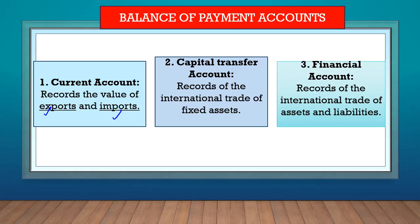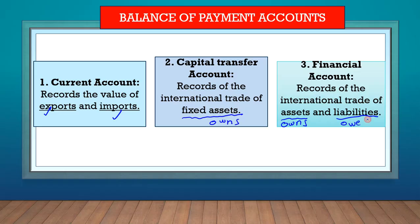The capital transfer account and the financial account go further. The capital transfer account also records fixed assets. Remember, assets are all the items that the business owns, and if they are fixed, the business will own those for more than one year. The financial account, on the other hand, records all assets and liabilities — not just fixed assets. Liabilities are all the items that the business owes, like debts and loans. Those are recorded in the financial account.